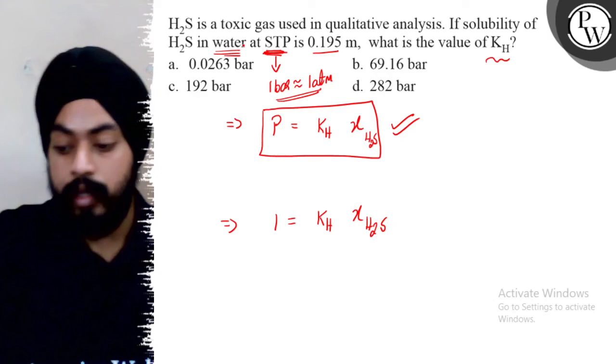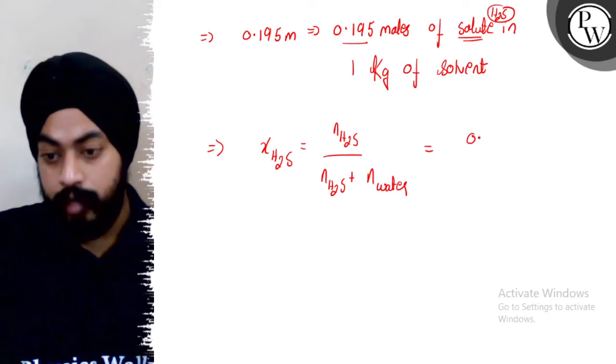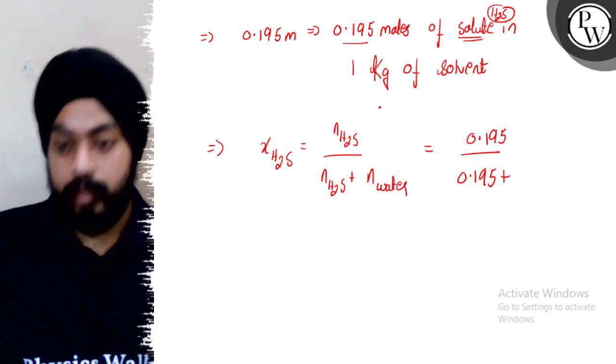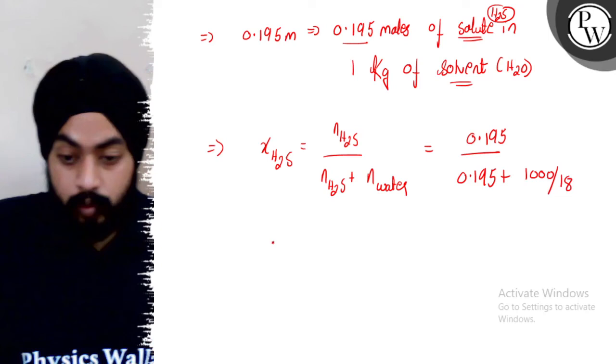So here we have to take the moles of H2S plus moles of water. So let's look here. The moles of H2S is 0.195 divided by 0.195 plus 1 kg solvent. So it means how the moles come. How did this mole come from 1 kg? This will be 1000 by 18. So mole fraction of H2S, how much will it be?